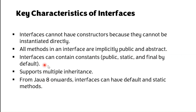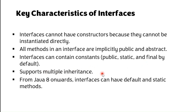The interface can contain constants; they are by default public, static, and final. Interfaces support multiple inheritance. The Java class does not support multiple inheritance due to ambiguity detected by the compiler, so it has been implemented through interfaces.